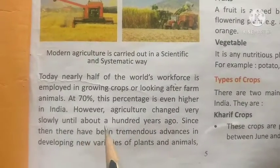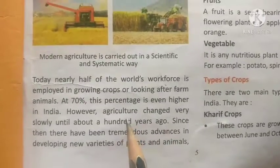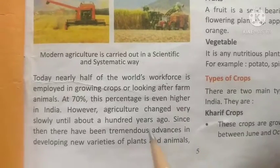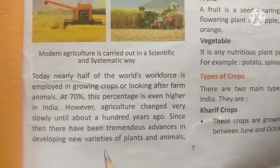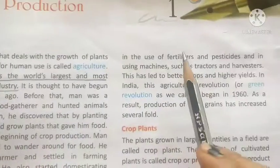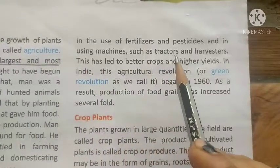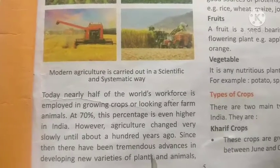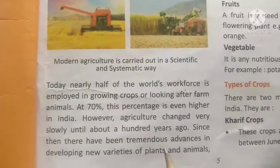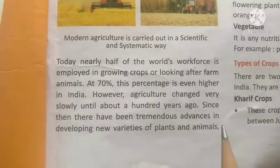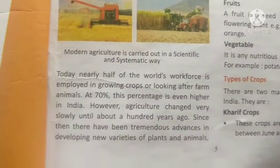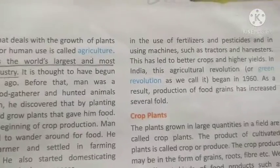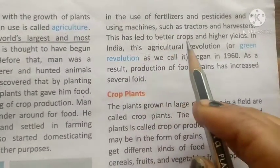Agriculture changed very slowly until about 100 years ago. Since then, there have been tremendous advances in developing new varieties of plants and animals, in the use of fertilizers and pesticides, and in using machines such as tractors and harvesters. This has led to better crops and higher yield.